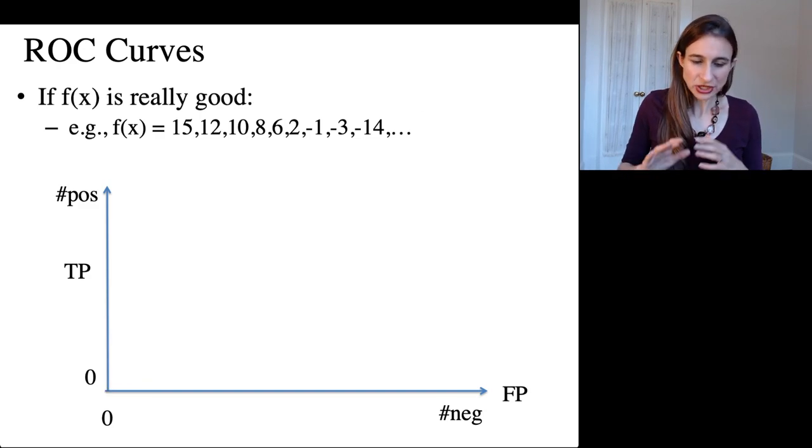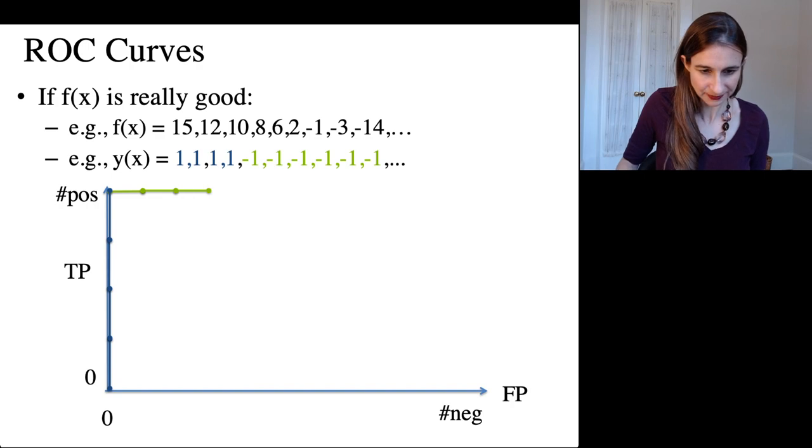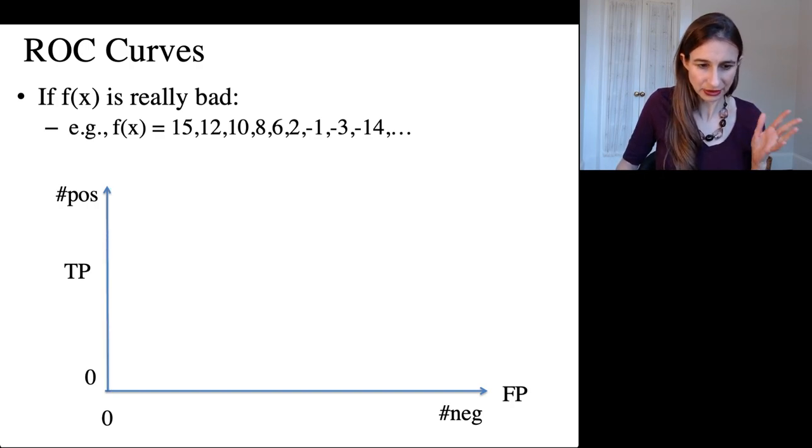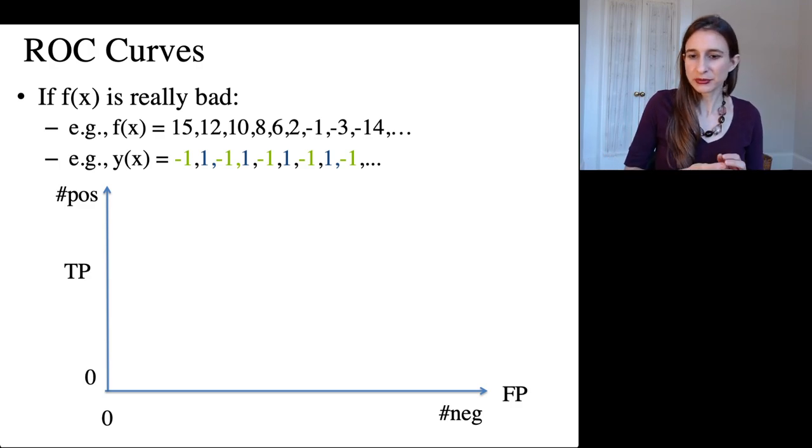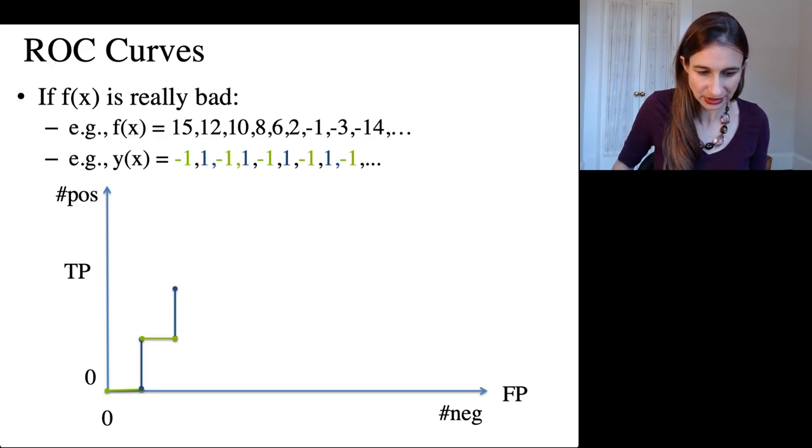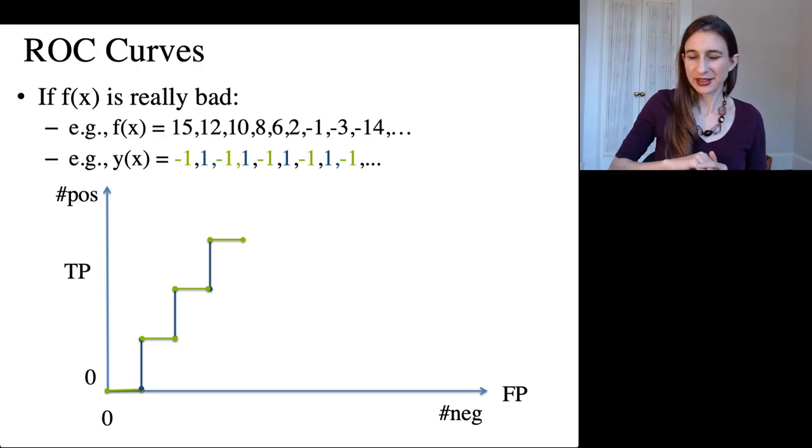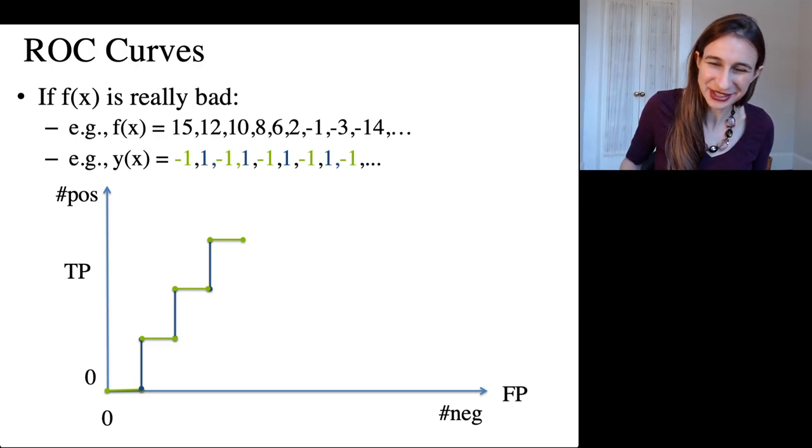Now, if the function f is really good, so for instance, you have all the positives before all the negatives, then you go up in the world before you go over. Now, if f is really bad and the labels are randomly scrambled, then the number of true positives increases at the rate of the false positives increase. And so the curves might go along the diagonal. And then in that case, the area under the curve is 0.5 and that's not so good.